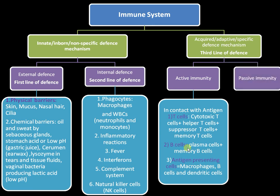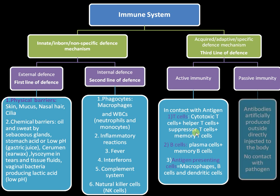The next type is passive immunity, where the person's own immune system is not actively involved. In the case of a snake bite or insect bite, antibodies produced externally are directly injected into the system. Since there is no direct contact with the pathogen from the patient's immune system perspective, this is called passive immunity.